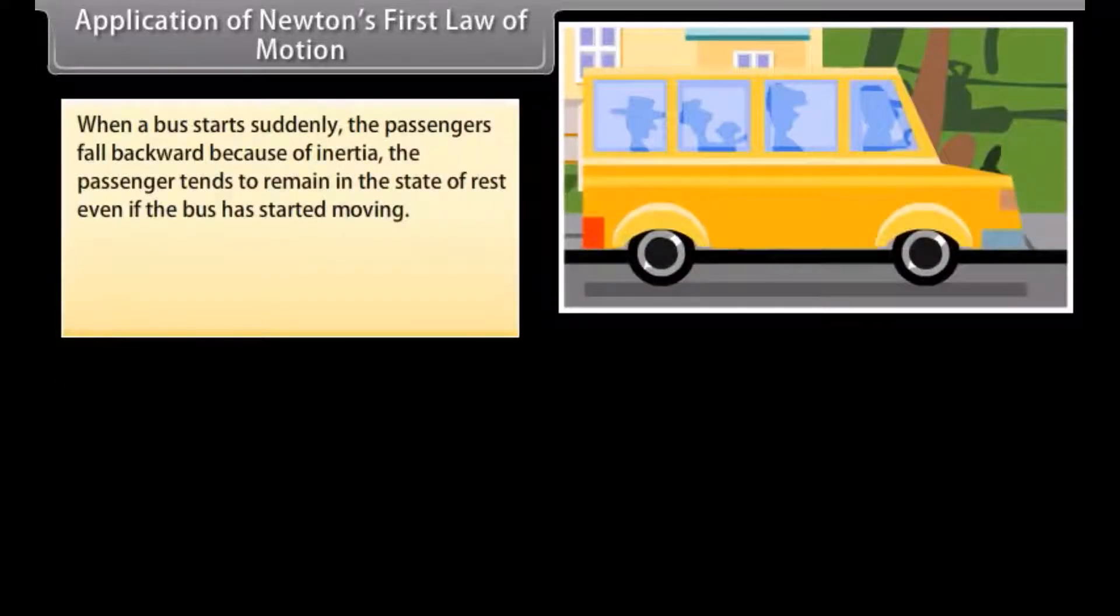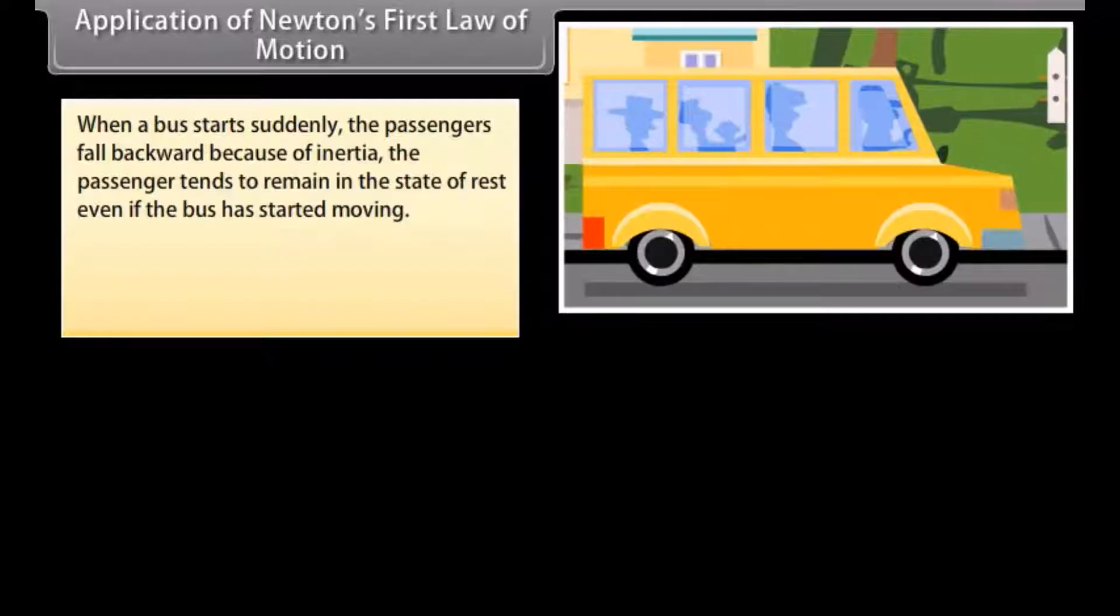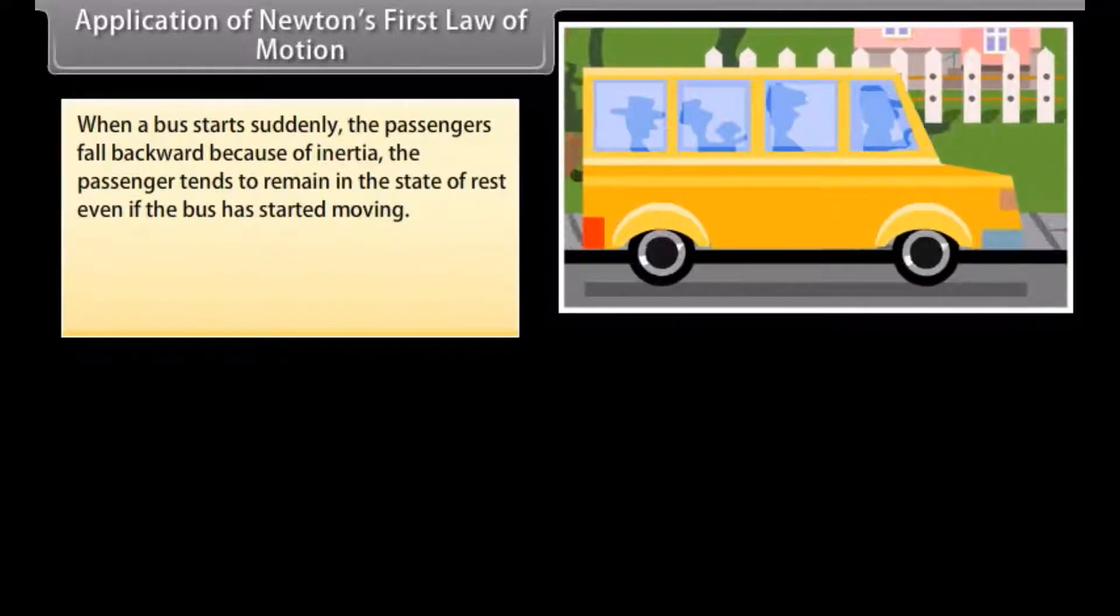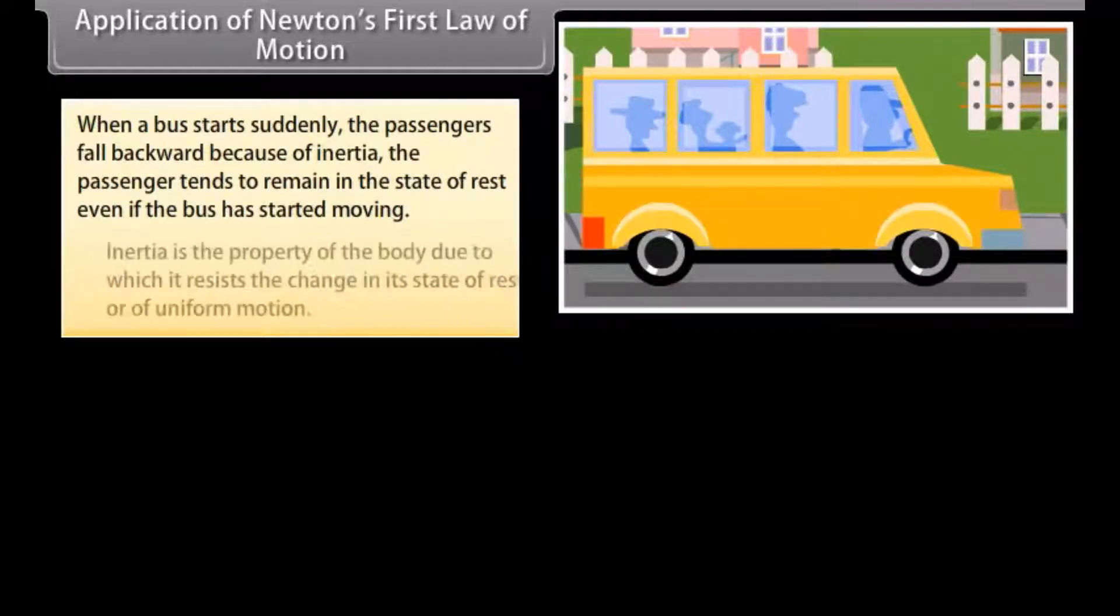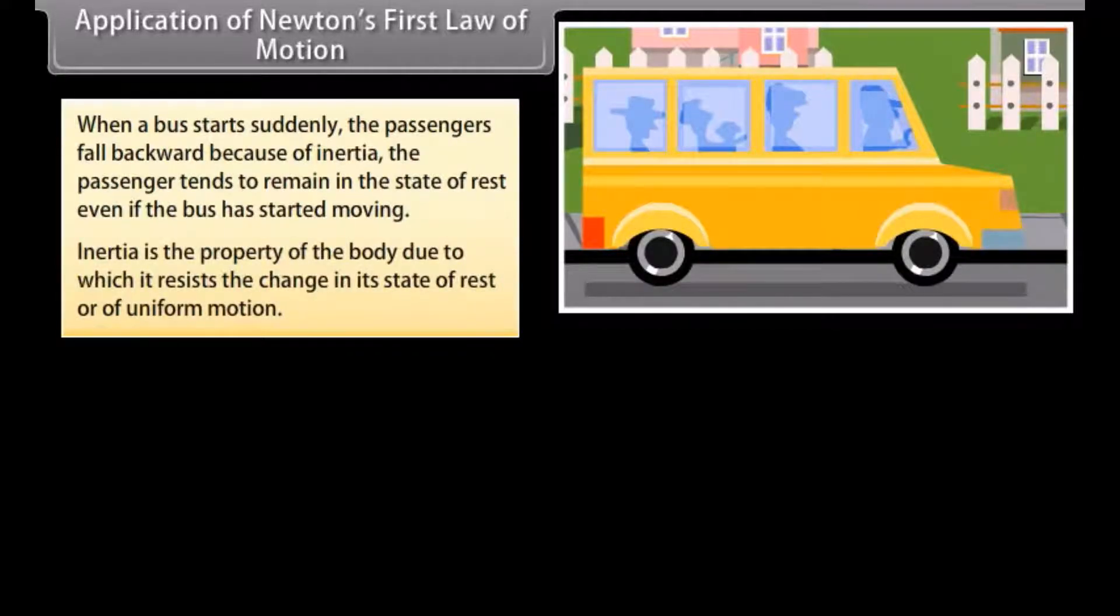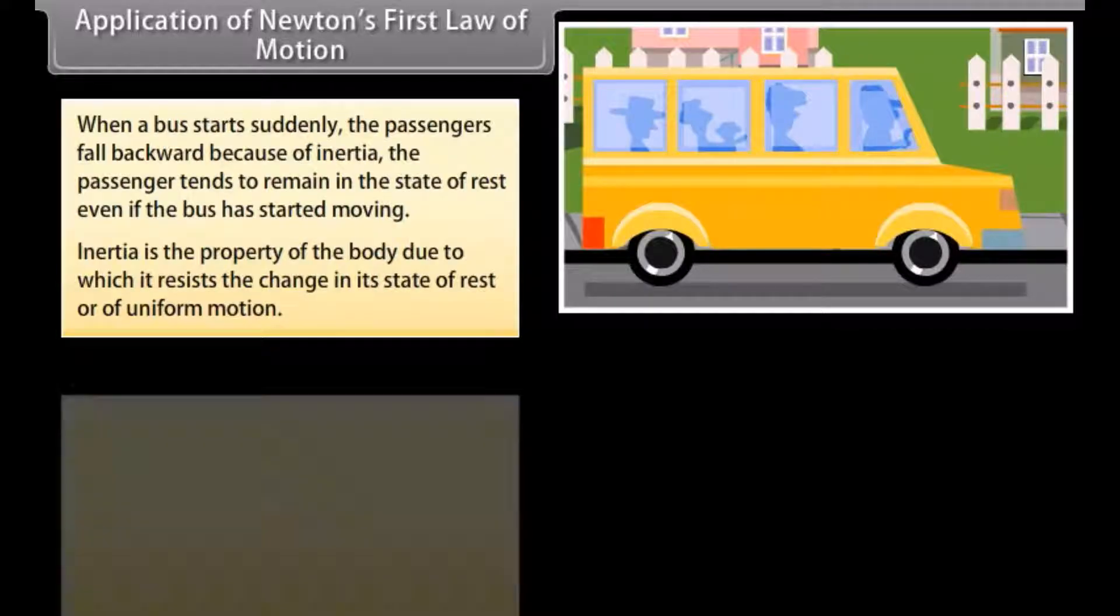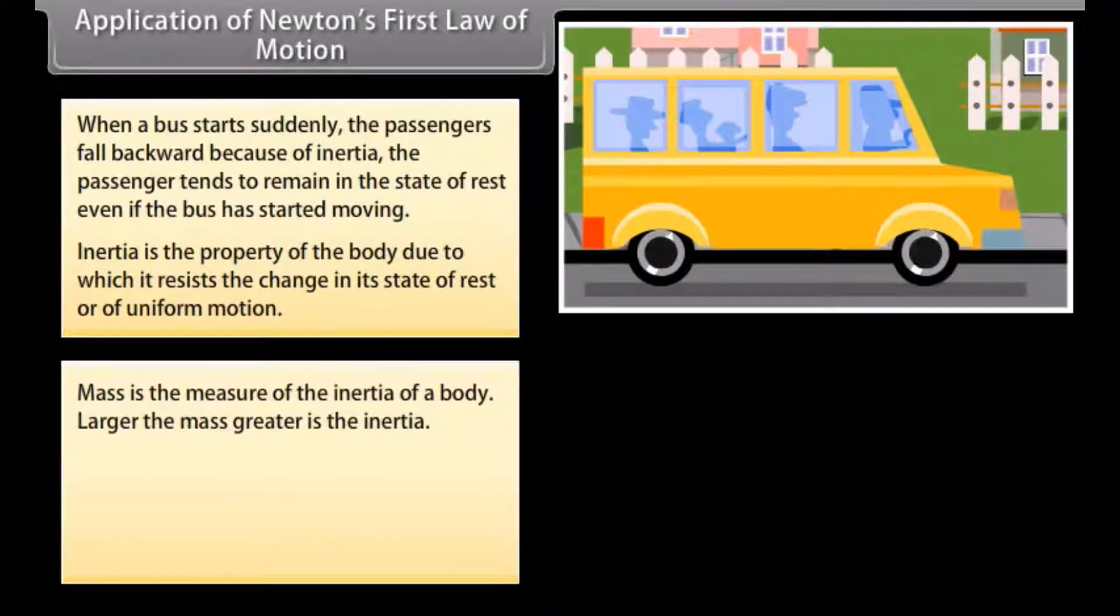When a bus starts suddenly, the passengers fall backward because of inertia. The passenger tends to remain in the state of rest even if the bus has started moving. Inertia is the property of the body due to which it resists the change in its state of rest or of uniform motion. Mass is the measure of the inertia of a body. Larger the mass, greater is the inertia.